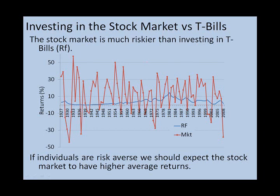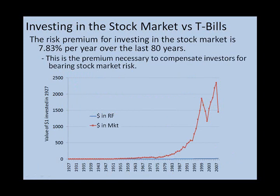If individuals are risk-averse, we would expect that the stock market will have to have higher average returns to compensate investors for bearing this extra risk. Is that true? In fact, that is true. The risk premium from investing in the stock market is almost 8% per year over the last 80 years. And this is the premium necessary to compensate investors for bearing stock market risk.